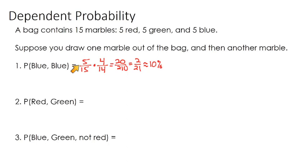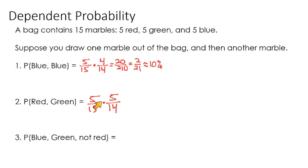Same situation: what's your probability of drawing a red and then a green? For your first event, you have 5 reds out of 15 total. For your second draw, even if you drew a red first, you still have 5 greens, but only 14 total marbles left. Notice how this differs from the previous problem: drawing a red didn't reduce the number of greens, unlike drawing blue then blue. Multiply straight across: 5/15 × 5/14 = 25/210, which simplifies to 5/42, and that's roughly 12%.